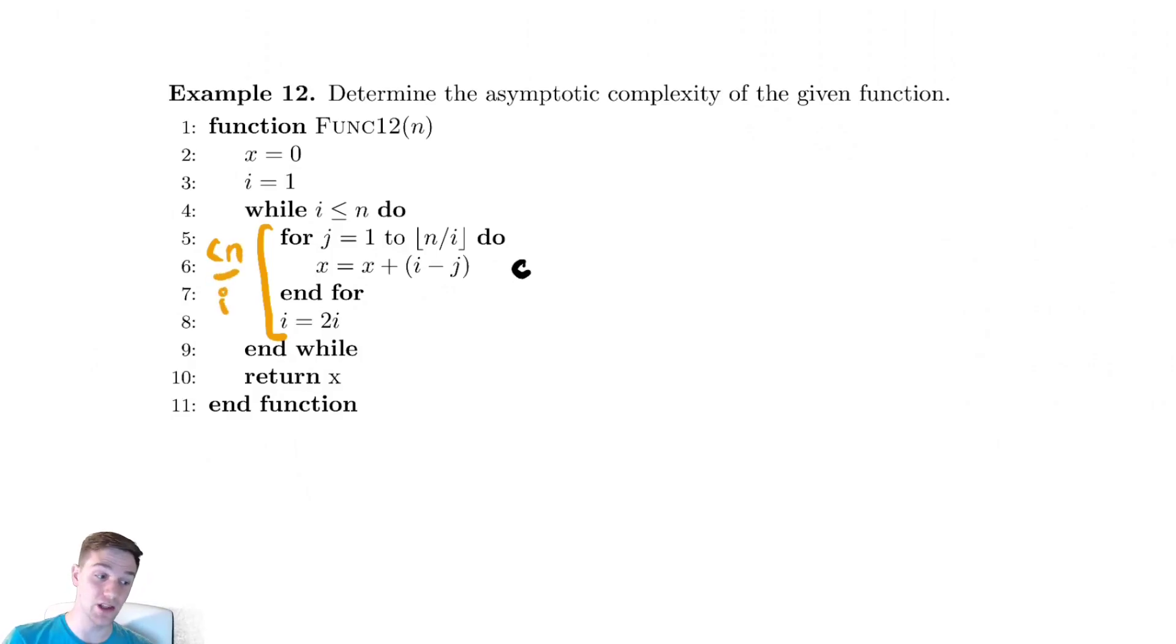To understand what's happening with the while loop, we're going to need to make a trace table or an iteration table. So we have an iteration and the value of the loop variable for the while loop, which is i.